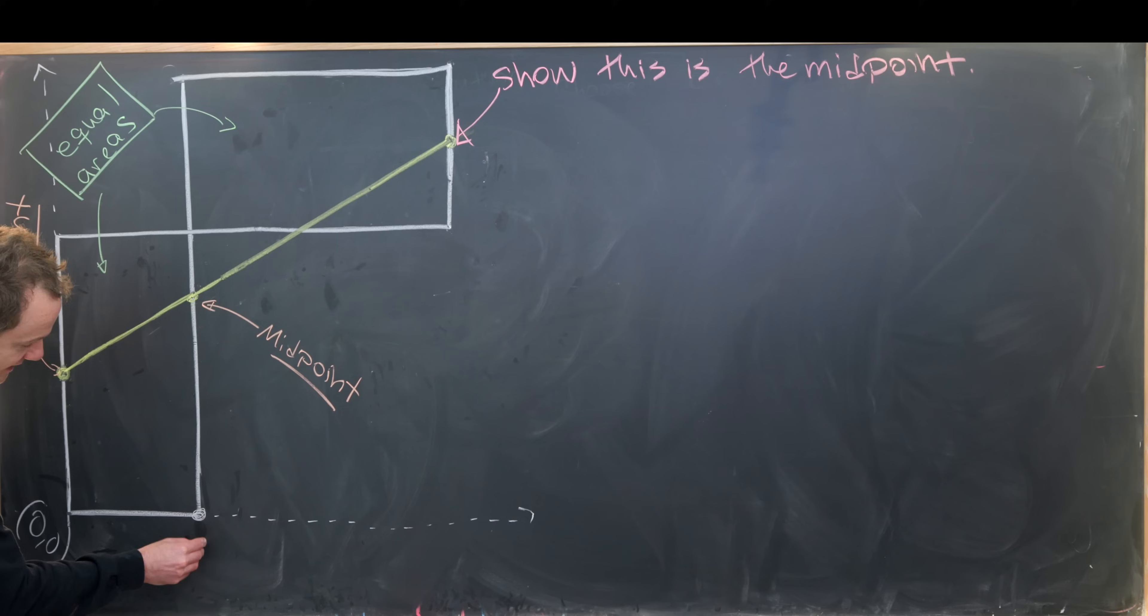I'm going to say this point right here is (a,0), so that makes this side length equal to a. I'm going to say this point up here is (0,b), so that makes this side length b. And furthermore it makes this midpoint right here really easy to calculate. That's just (0, b/2).